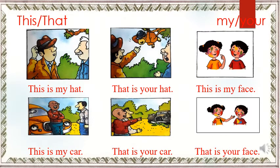Now look at your book, page 19. Here we have 'this', 'that', 'my', and 'your' — these things you have to learn. In the first picture, this man is talking about his hat, so he is telling 'this is my hat.' And when the man is talking about that other person's thing, he is telling 'that is your hat.' You can see the man pointing to that monkey which is on the tree and telling that man 'that is your hat.'